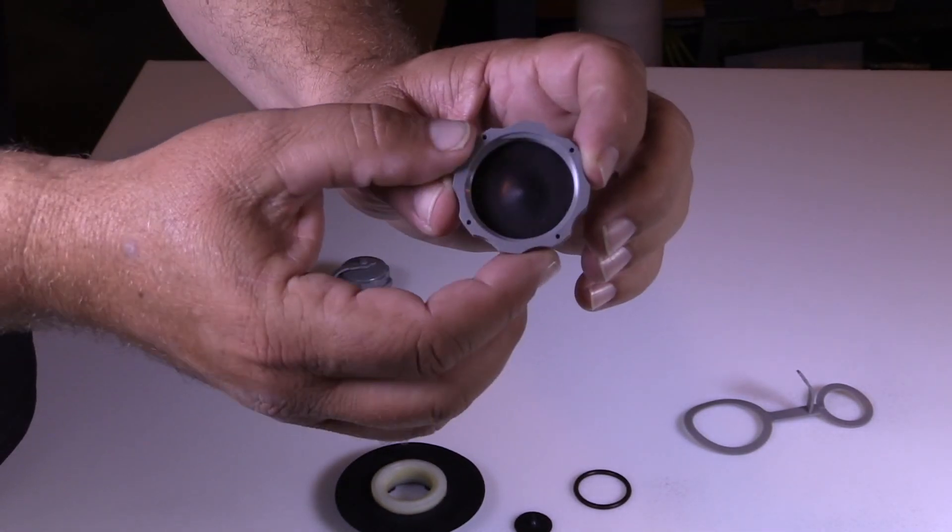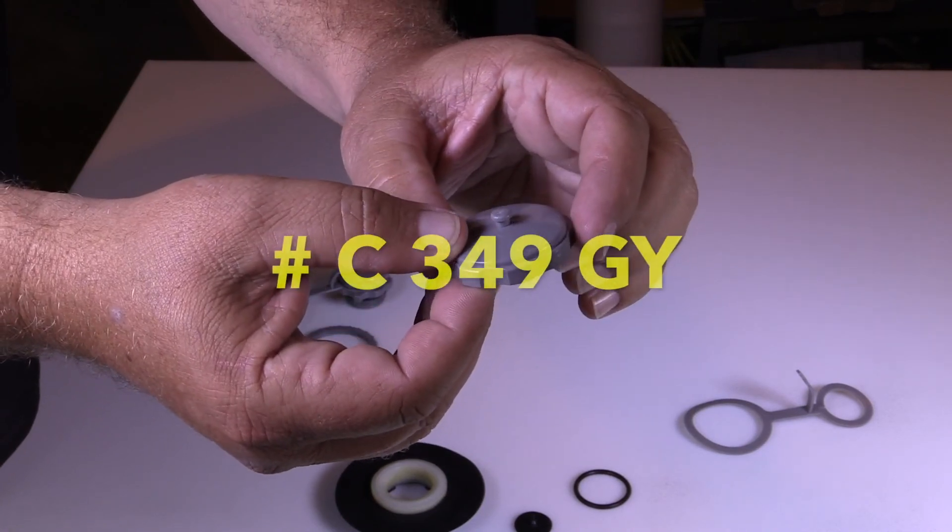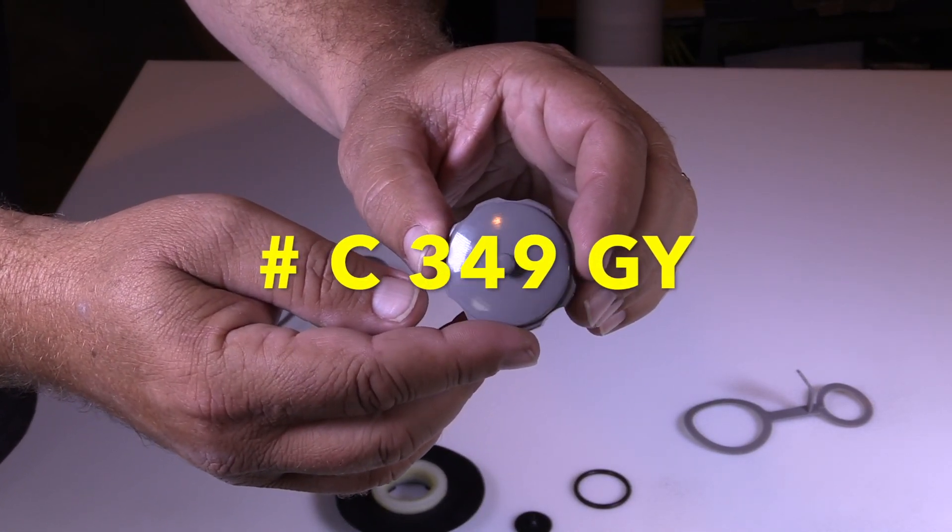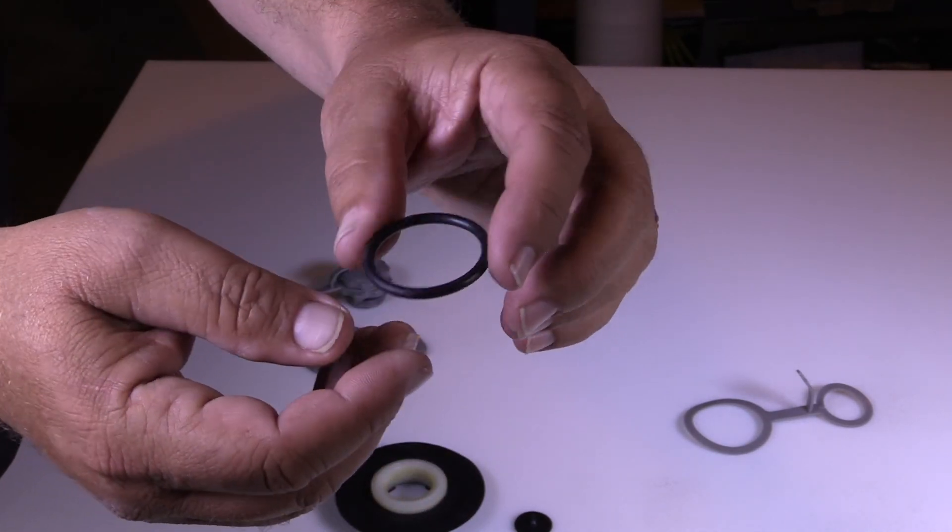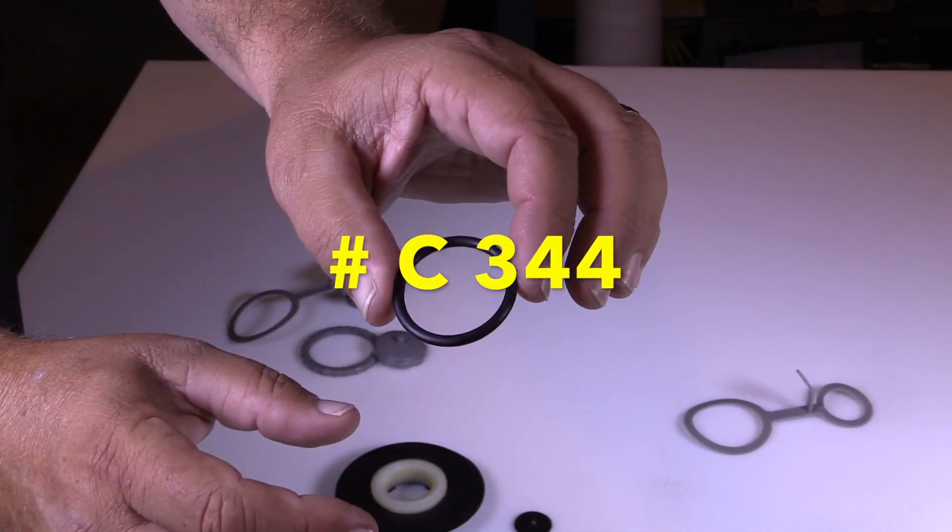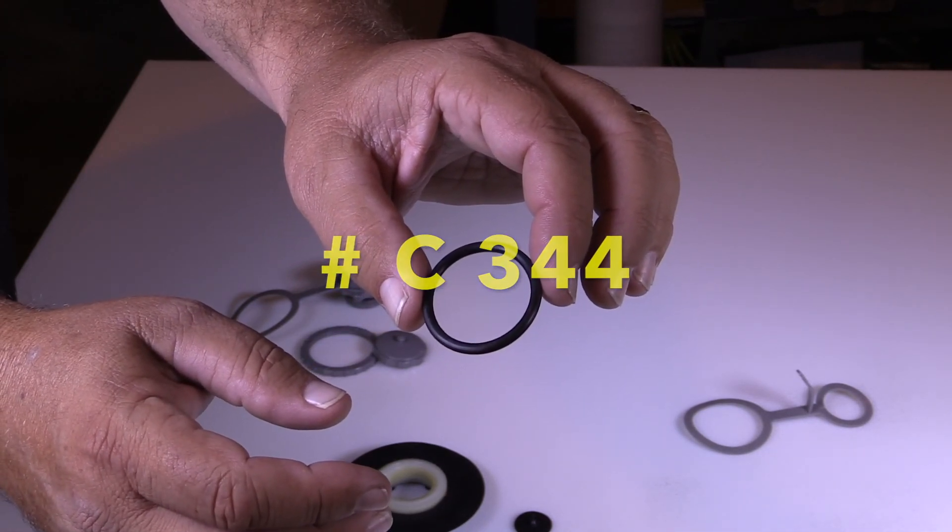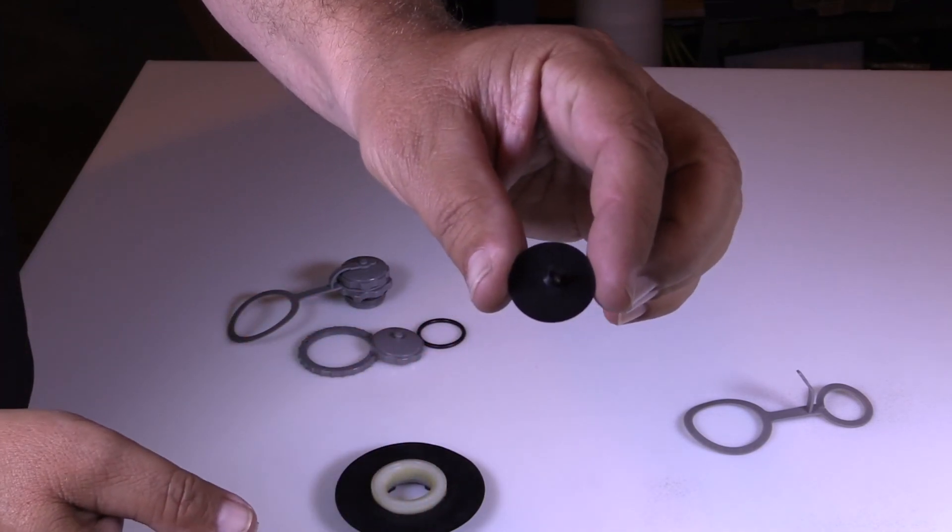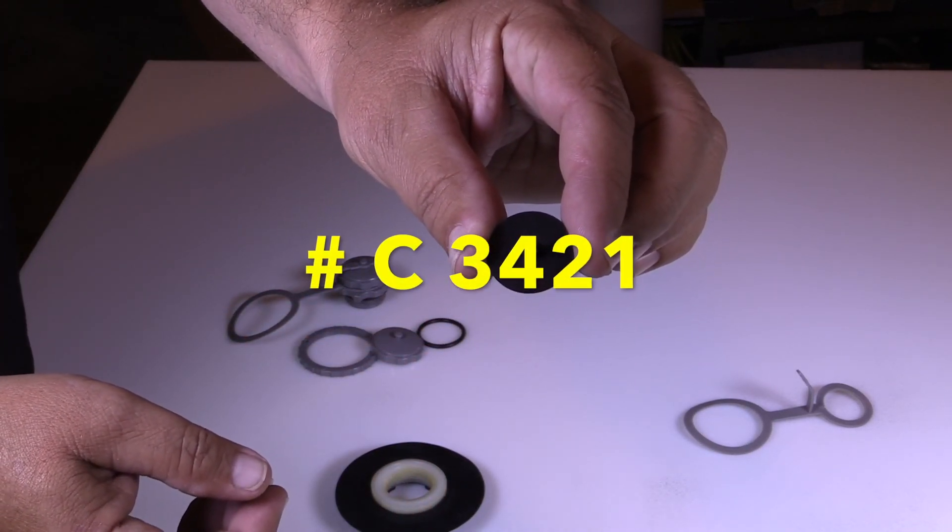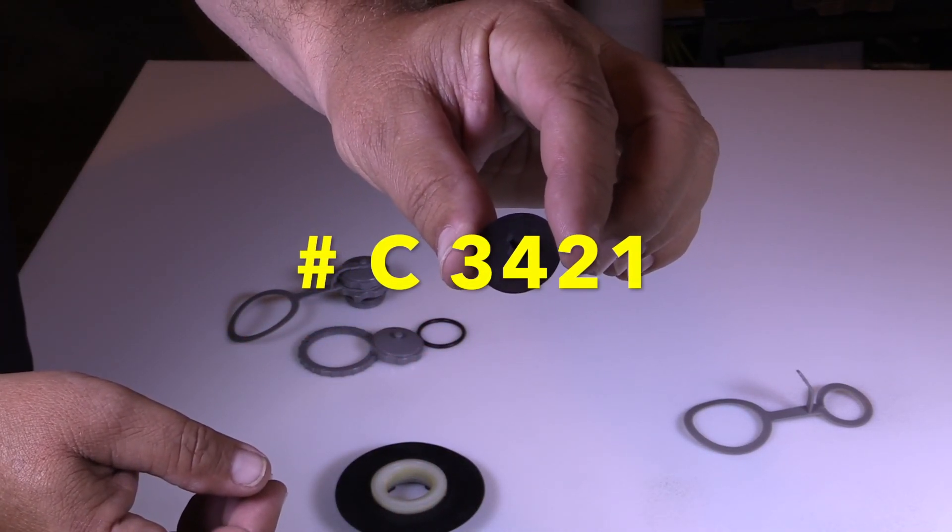The valve cap is C349GY. The rubber O-ring is part number C344. The rubber flapper is part number C3421.